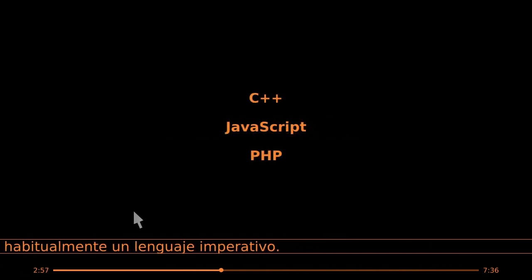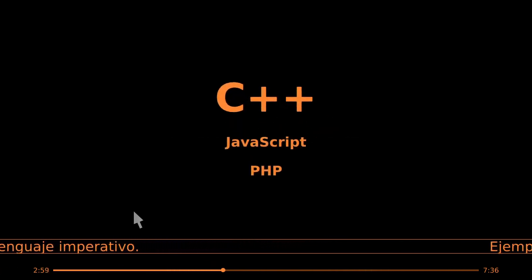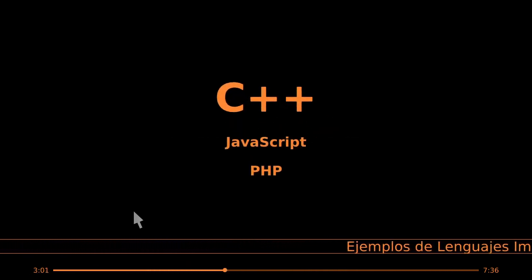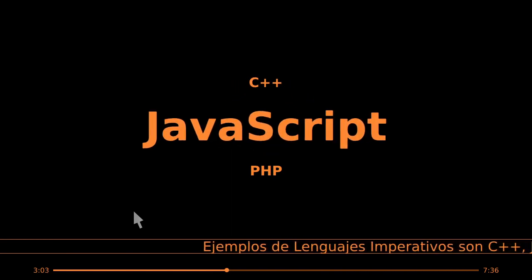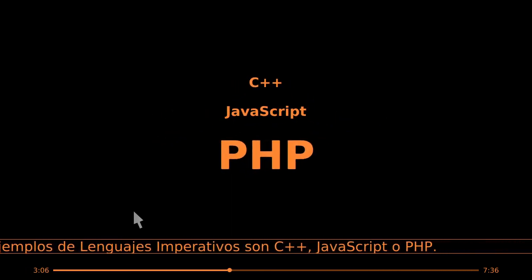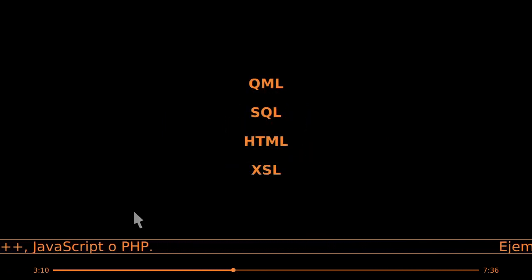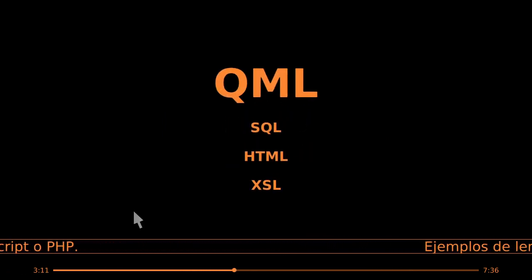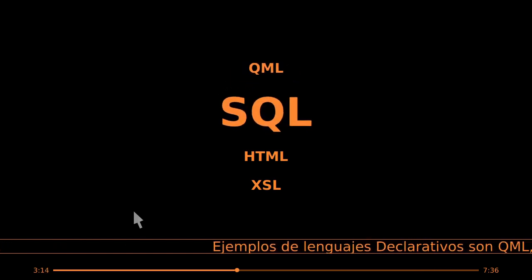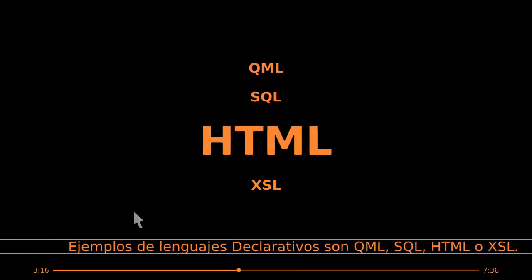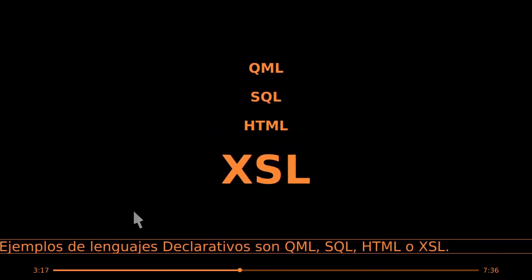Ejemplos de lenguajes imperativos son C++, Javascript o PHP. Ejemplos de lenguajes declarativos son QML, SQL, HTML o XML.